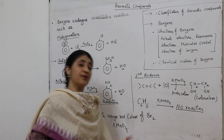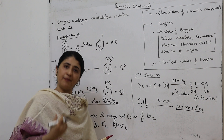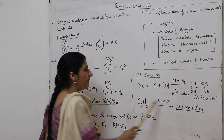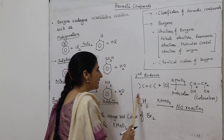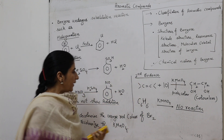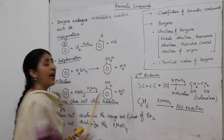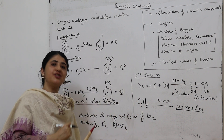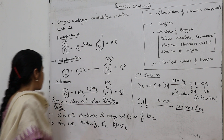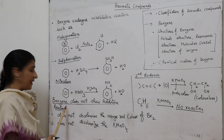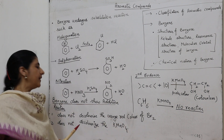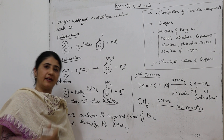However, benzene also contains double bonds — three double bonds — but in spite of these double bonds, it does not react with KMnO4, meaning it does not decolorize the pink color. So we have two pieces of evidence to show that benzene does not undergo addition reactions; rather, it undergoes substitution reactions. First evidence: benzene does not decolorize the orange-red color of bromine. Second evidence: benzene does not decolorize the pink color of KMnO4.